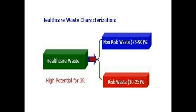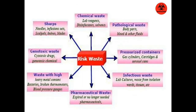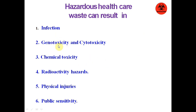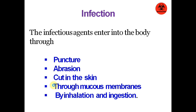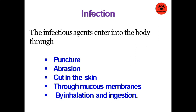Sources of biomedical waste include hospitals, labs, research centers, blood banks, and nursing homes. Everyone in this chain is under risk: sanitary workers collecting the waste, medical and paramedical staff, patients, bystanders, attendants, and the general public. The hazards include infection, genotoxicity, chemical toxicity, radioactive hazards, and physical injuries.